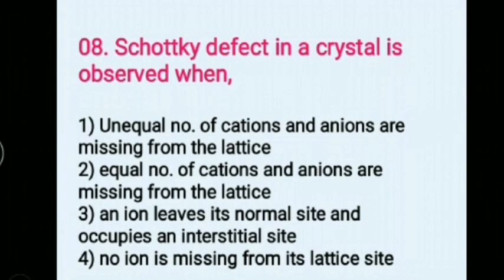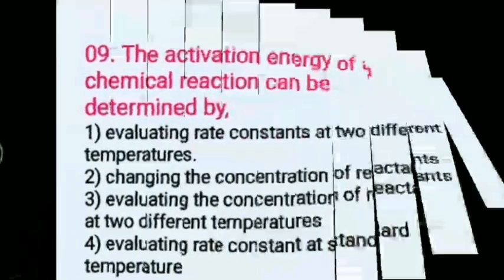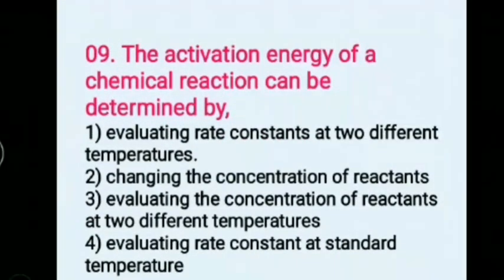Schottky defect in a crystal is observed when: Options: 1) An equal number of cations and anions are missing from the lattice, 2) Equal number of cations and anions are missing from the lattice, 3) An ion leaves its normal site and occupies an interstitial site, 4) No ion is missing from its lattice site. Answer: 2) Equal number of cations and anions are missing from the lattice.